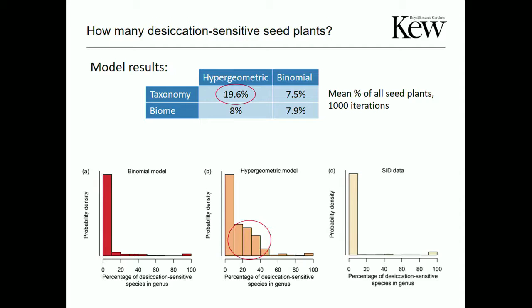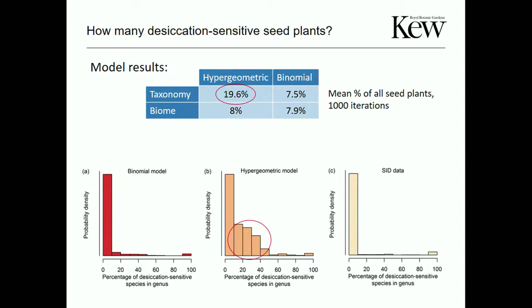We conclude that about 8% of seed plants likely have the desiccation-sensitive trait. Most are woody plants; a few herbaceous species are all perennial. They're mostly mature-phase forest trees occurring within the wet tropics. The trait also occurs throughout the phylogeny — monocots, eudicots, magnolids, gymnosperms — but is strongly conserved at low taxonomic levels. These relationships allow us to predict for unknown species.